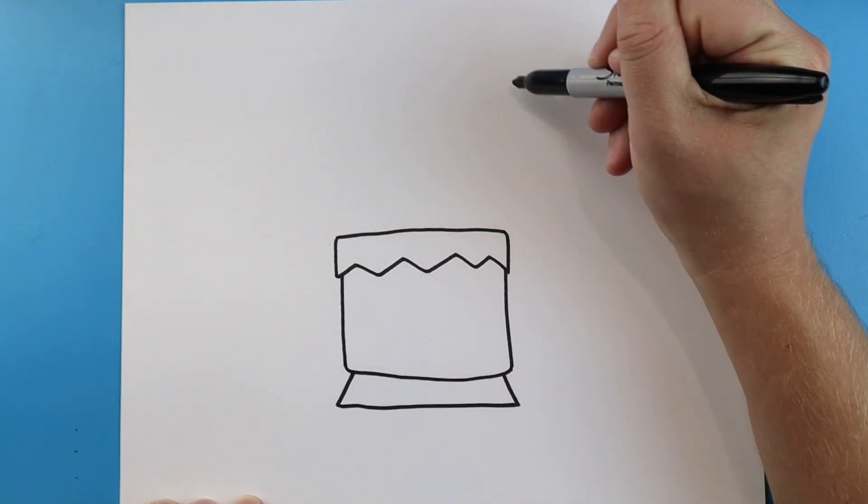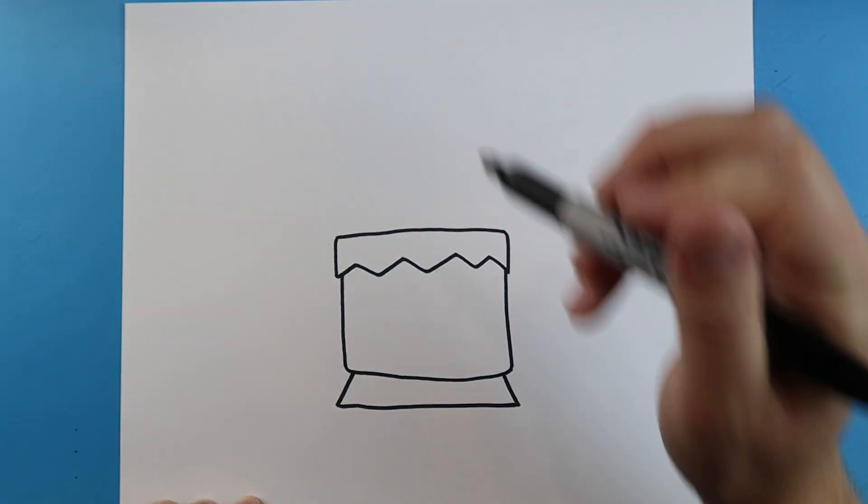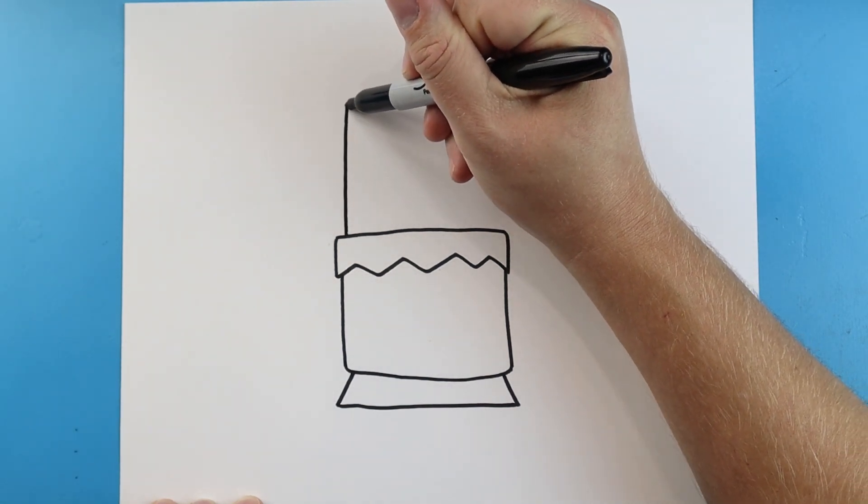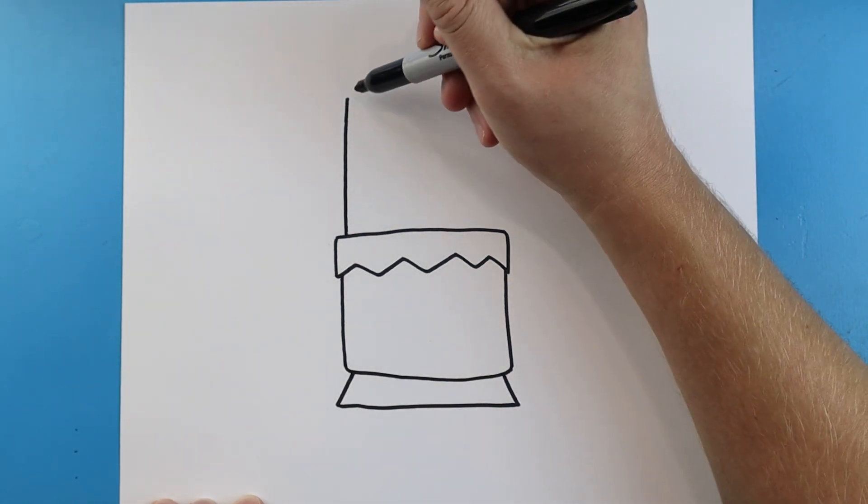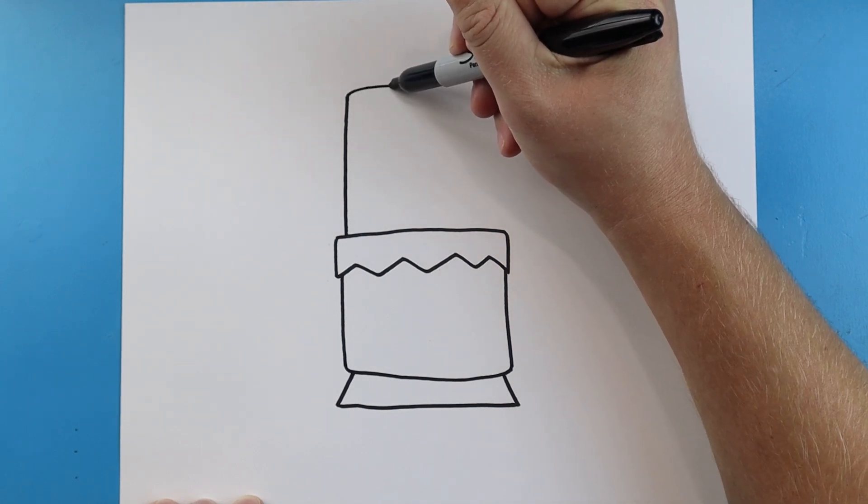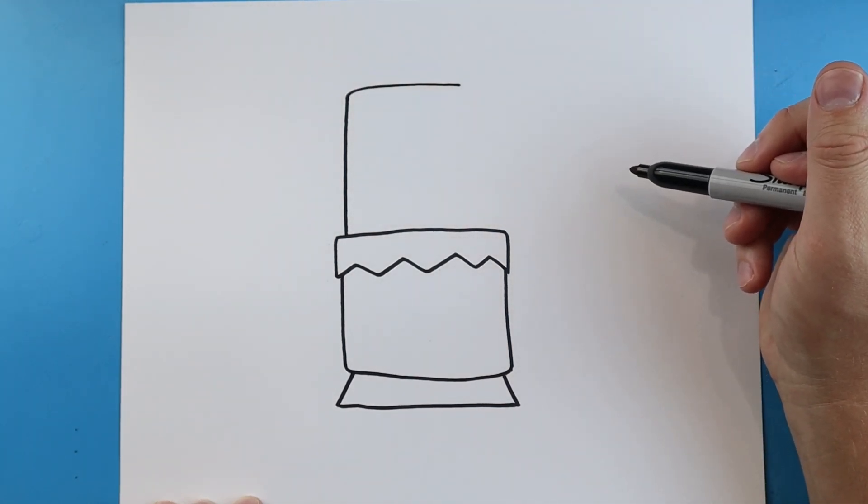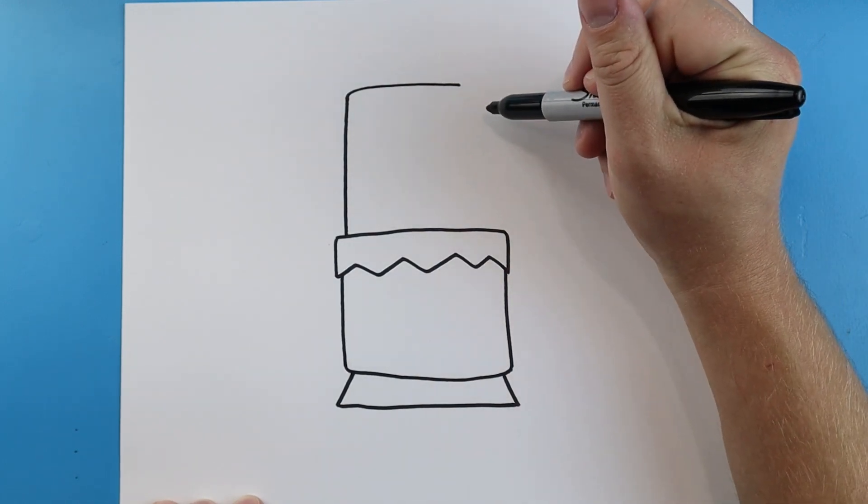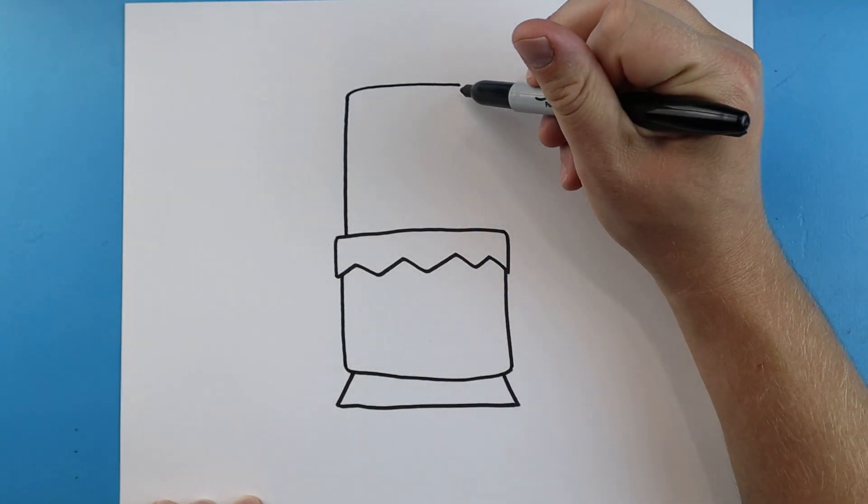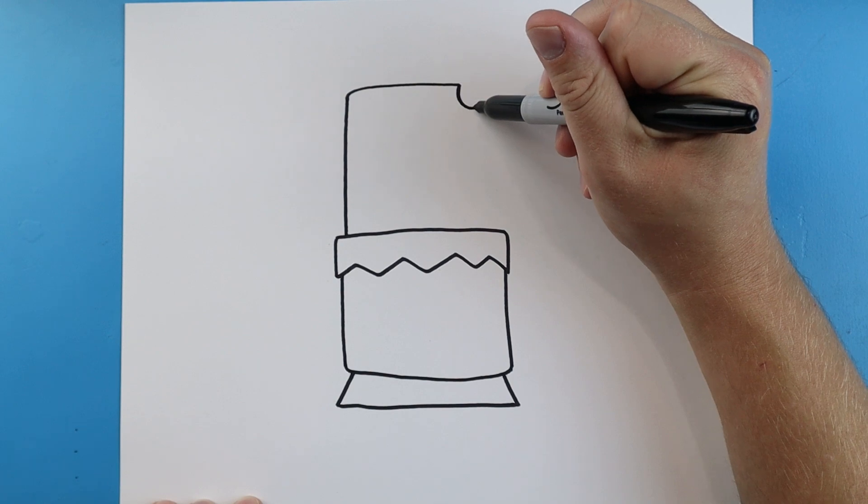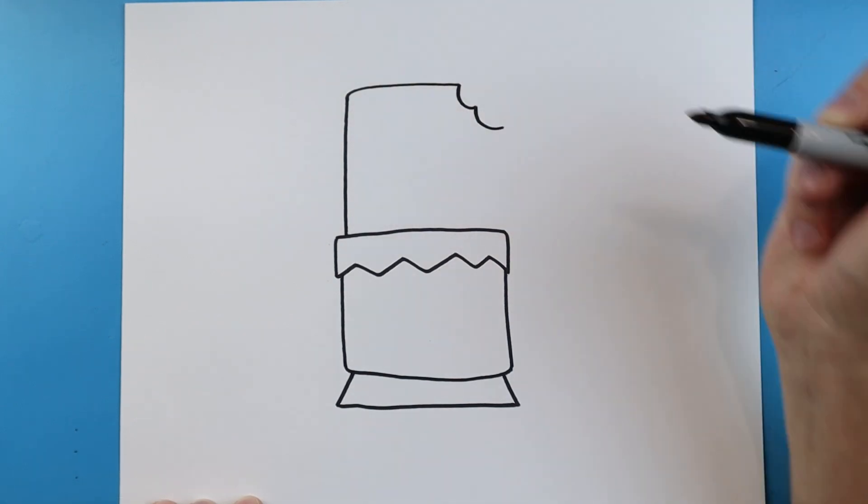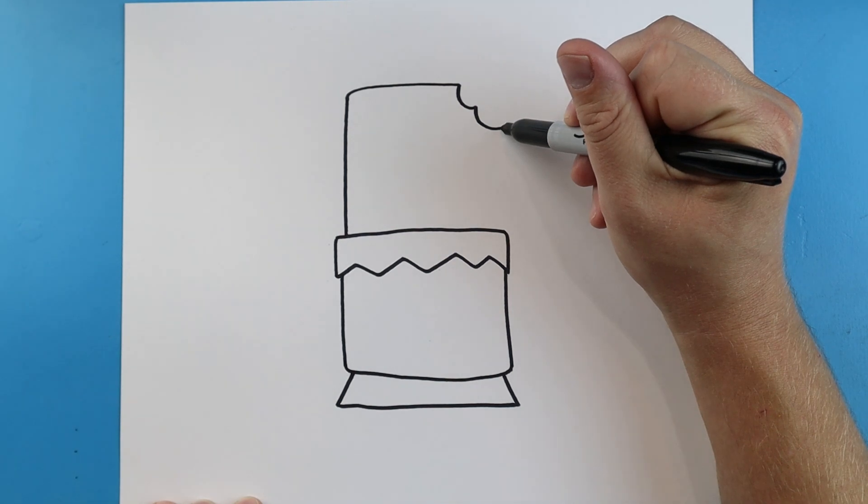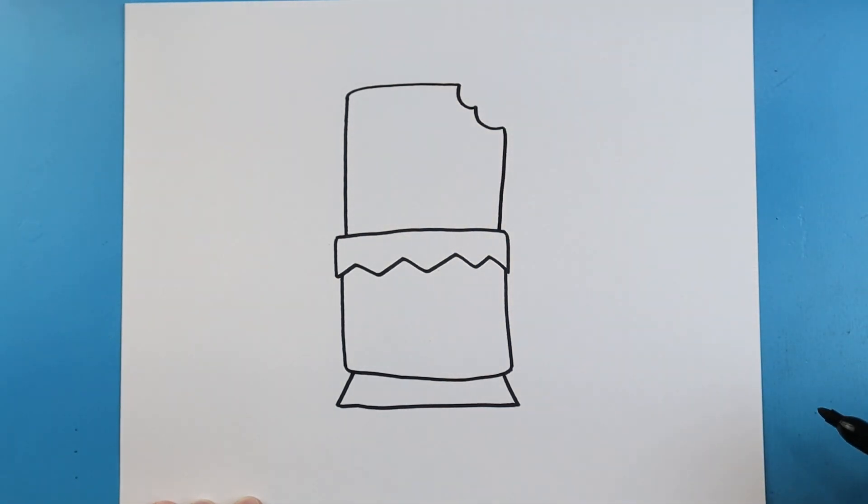Starting up here we're going to draw the actual candy bar. So starting here let's make a line that comes up. Next we're going to make a line that comes over. I want it to look like there's a little bite taken out of our candy bar. So I'm just going to make a couple little curvy bumps like this. Next we'll draw a line that comes straight down.